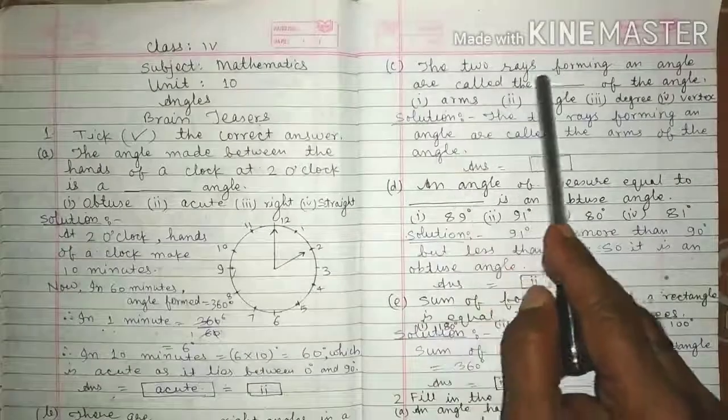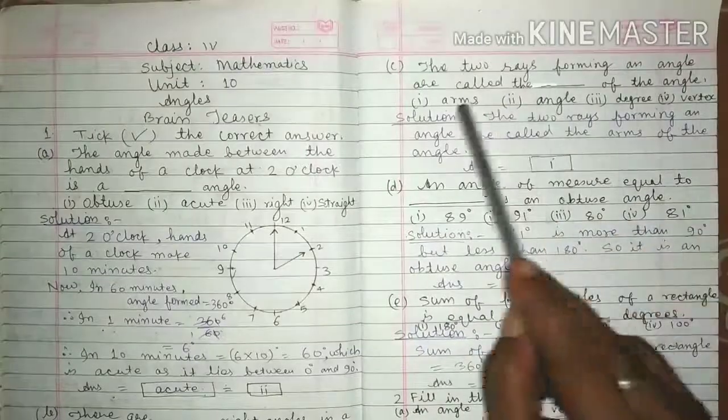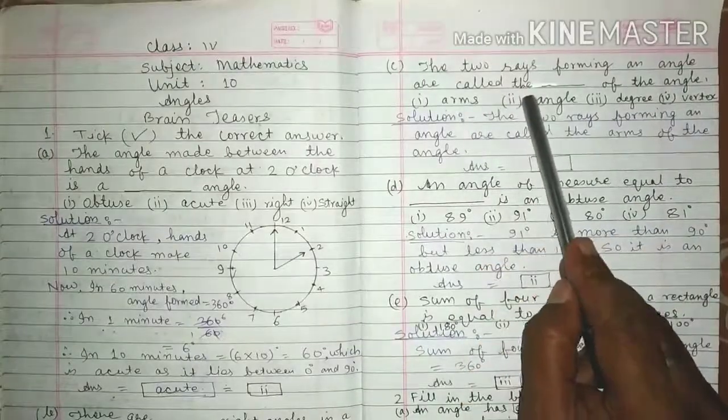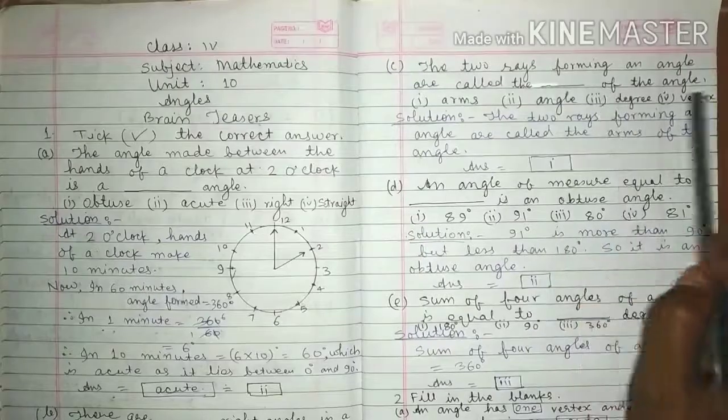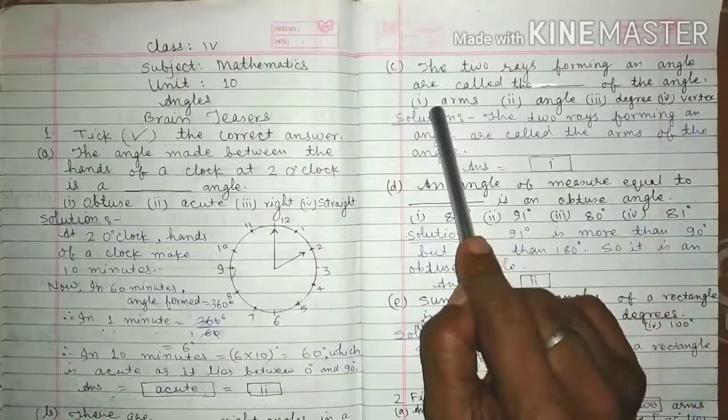Now, question number C. The 2 rays forming an angle are called the what of the angle? First, arms,